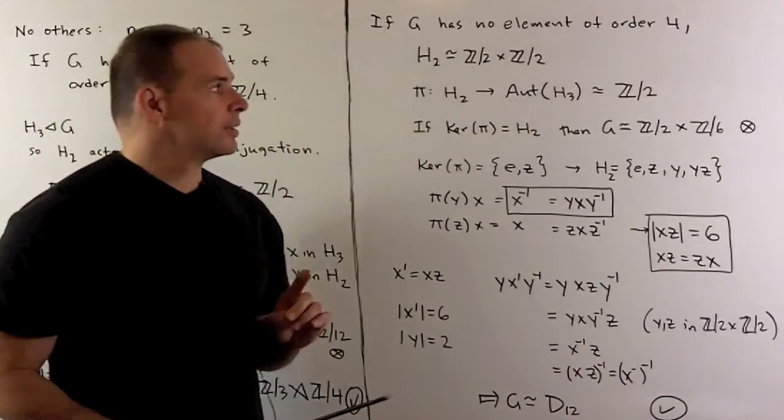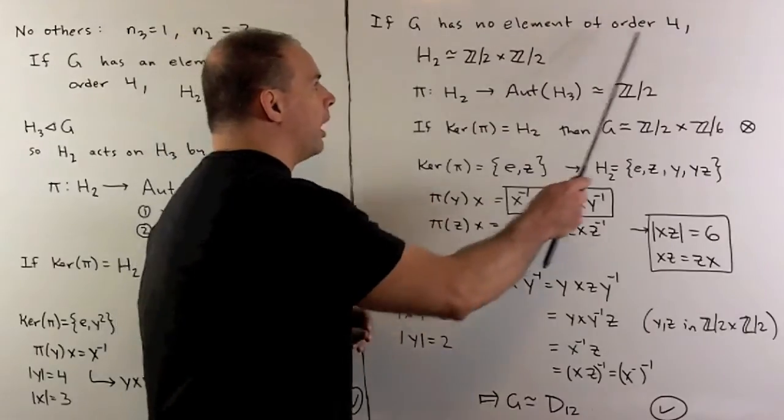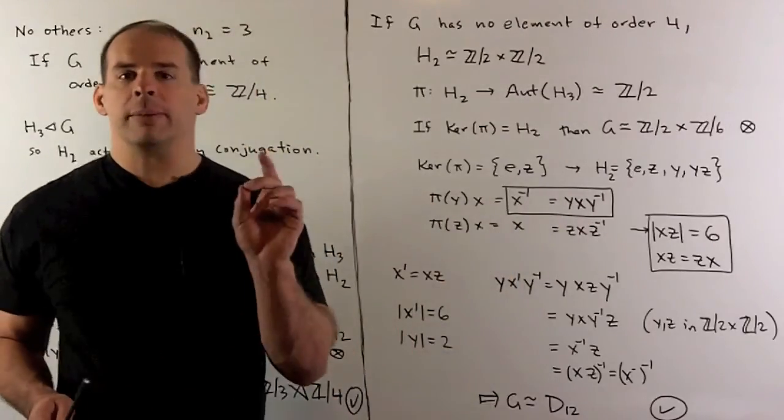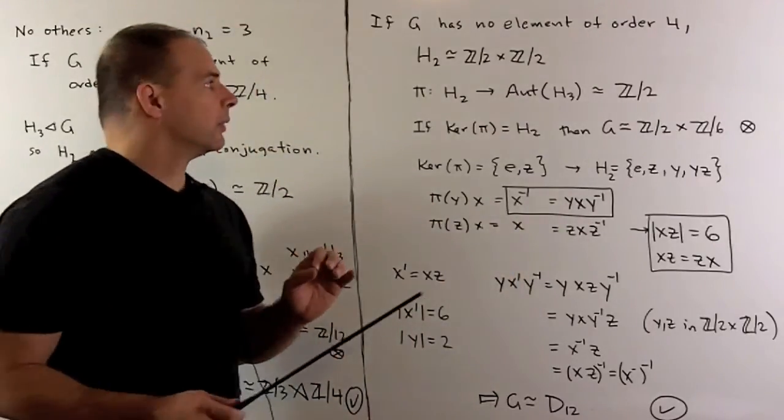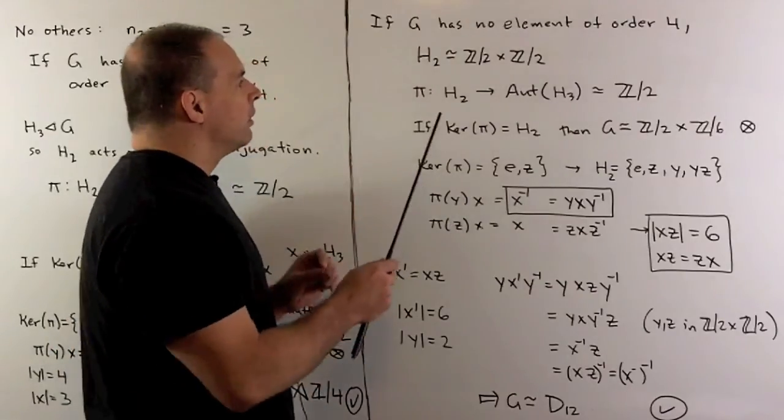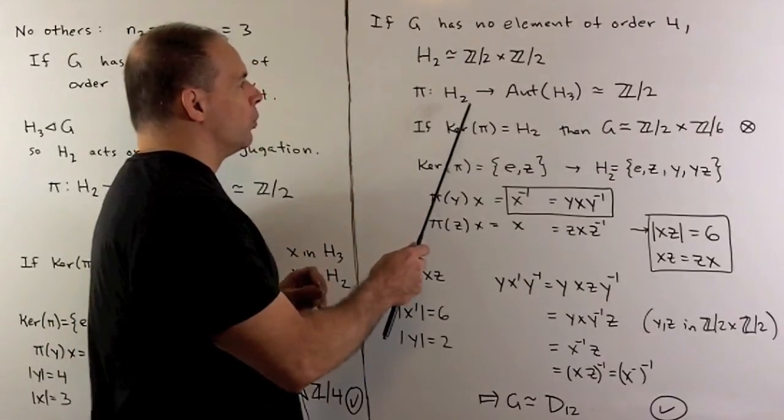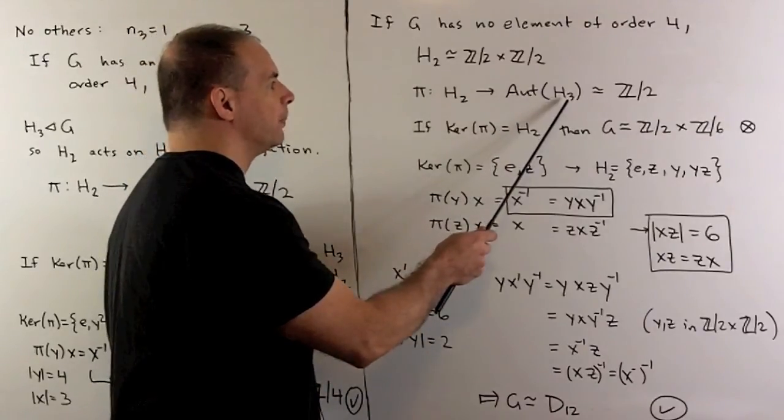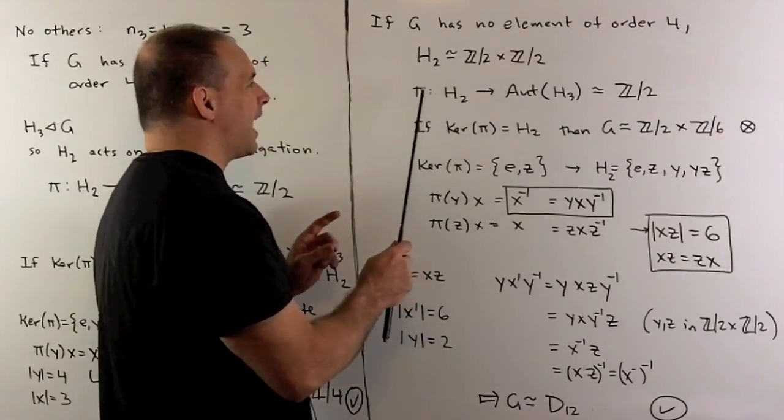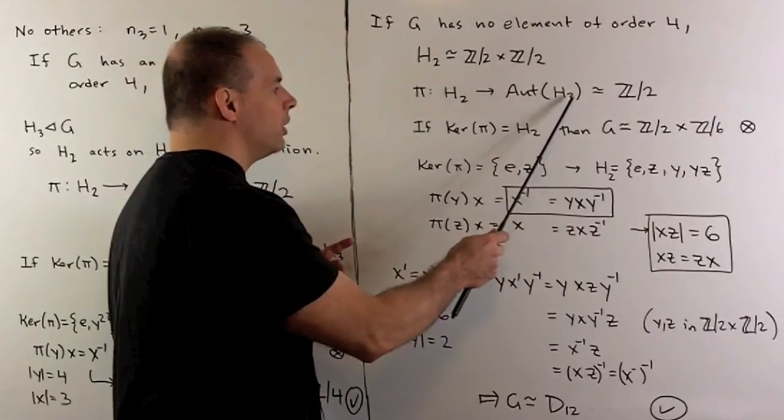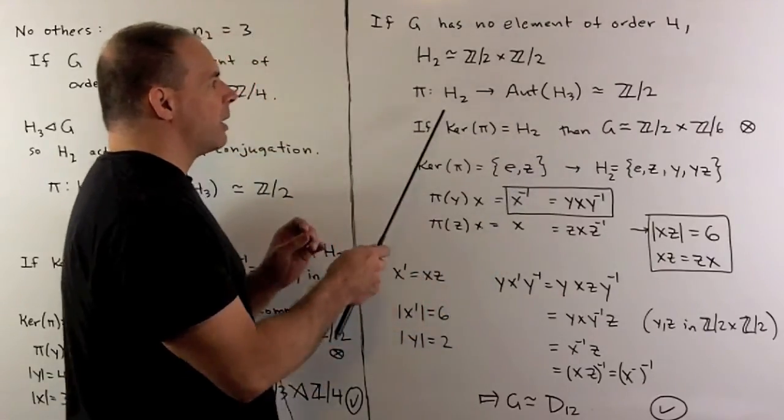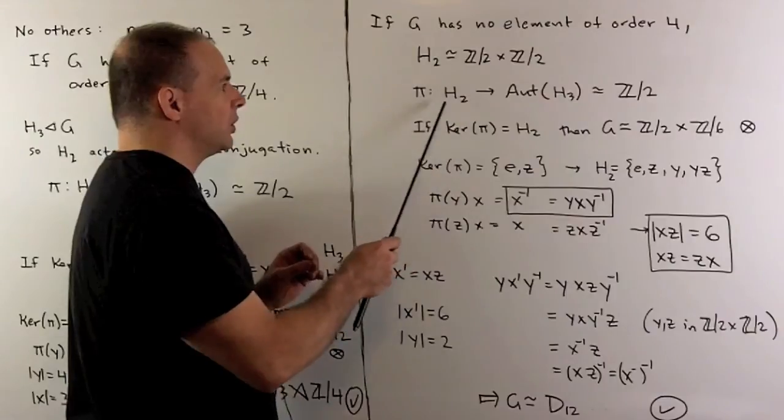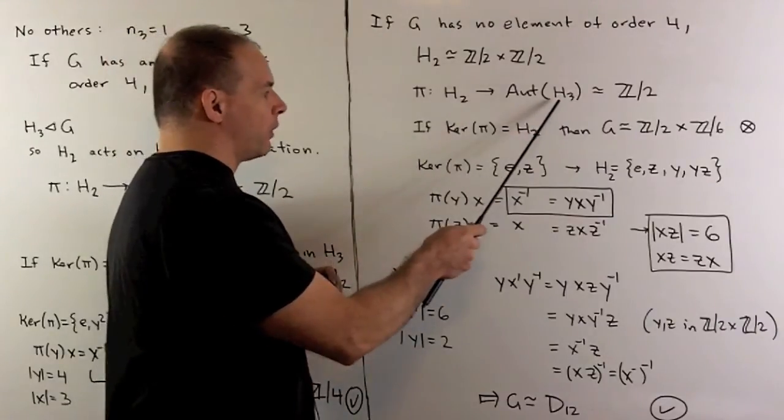For the other case, where we have no group element of order 4, the argument's going to be essentially the same. So we're going to have a map from our Sylow 2, which is now Z2 cross Z2, into the automorphism group of the Sylow 3. We're going to have to have that this homomorphism is non-trivial. So we're going to have to have some element in our Sylow 2 going to the inverse automorphism here.